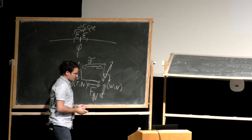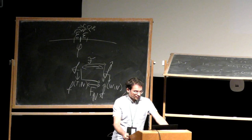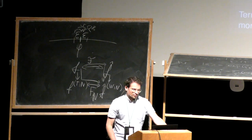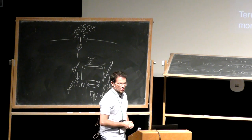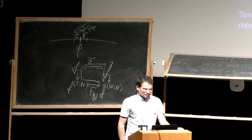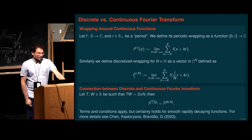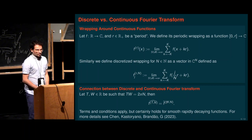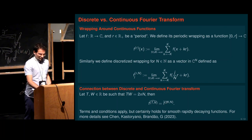This is a nice connection between discrete and continuous Fourier transform. Terms and conditions apply — you should check the details in our paper — but it certainly holds for smooth and rapidly decaying functions, and for quite general functions otherwise. The main requirement is that the summations exist. This gives us intuition from the continuous case to understand what to do in the discrete Fourier transform picture.